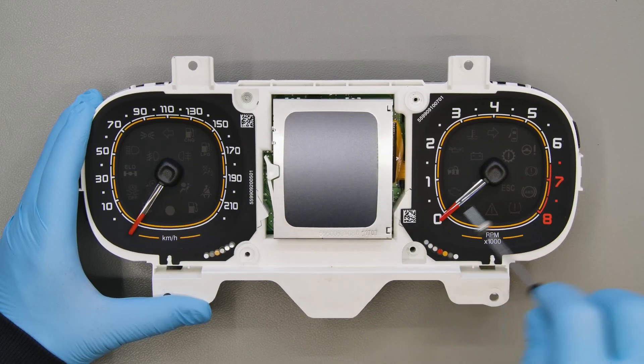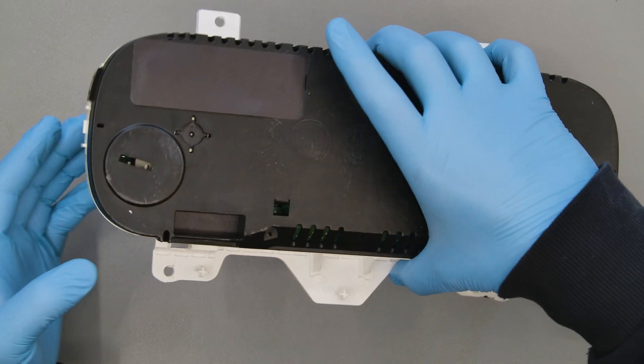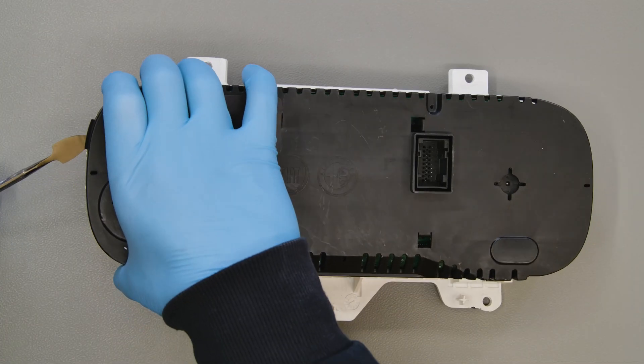Undo the two screws placed on the white interior plastic and, with the head of the spudger, remove the back part.